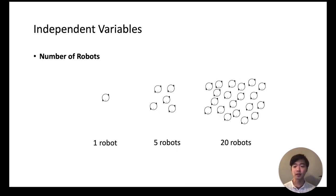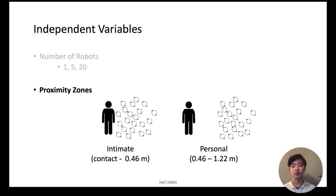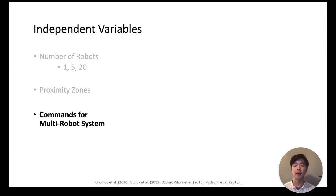To answer these questions, we ran an elicitation study with the following independent variables. For number of robots, we had 1, 5, or 20 robots. And for proximity zones, we either used intimate or personal. We also compiled a set of commands for multi-robot systems from prior literature.